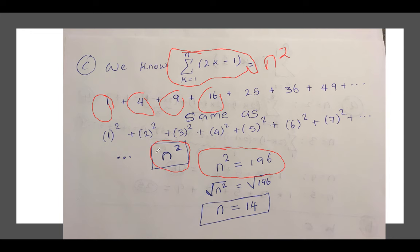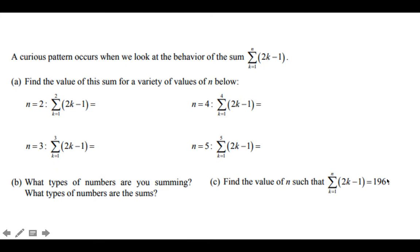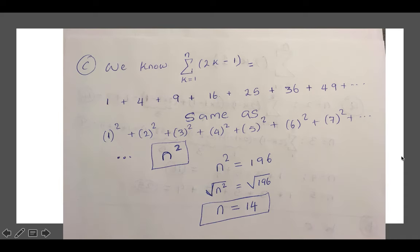Why? Because this sum equals n square. It gives you perfect squares for different n values. So because this eventually equals n square, I'm gonna set n square equal to 196. That's what they gave us in the question. So because it's giving us 196, then I take the square root of each side, I get n equals 14.